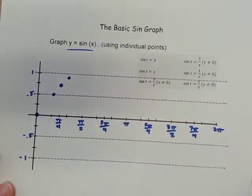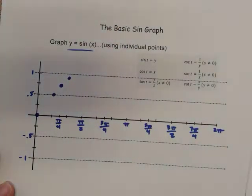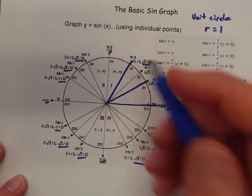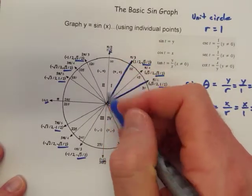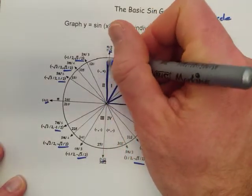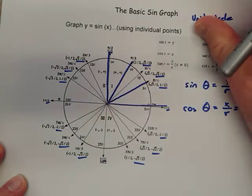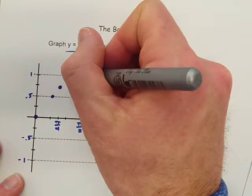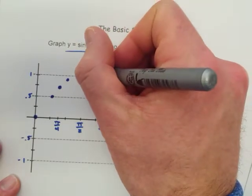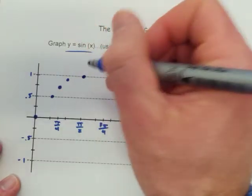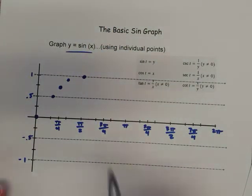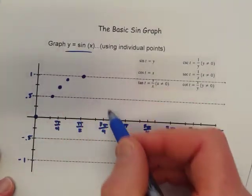And then finally, the last one, at least to get the pattern anyway, the last one I have is pi over 2, or the 90 degree angle. And so that one, the y value there is just positive 1. And that's, you know, kind of nice that we have that as a good value. So you're starting to see a little bit of a trend here.